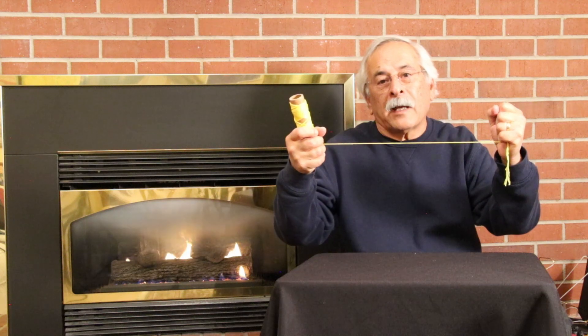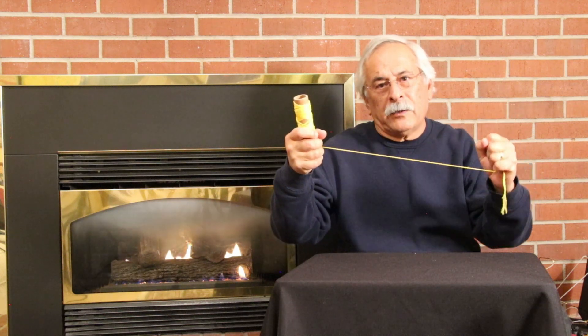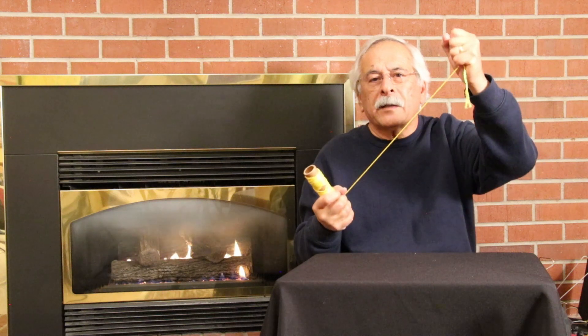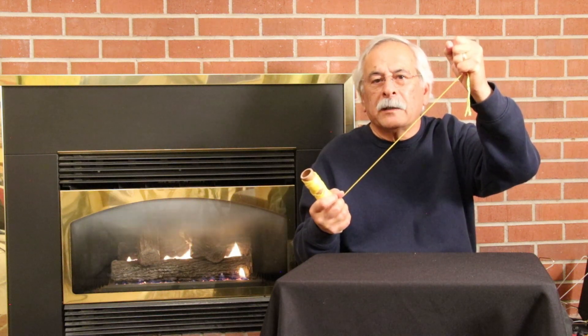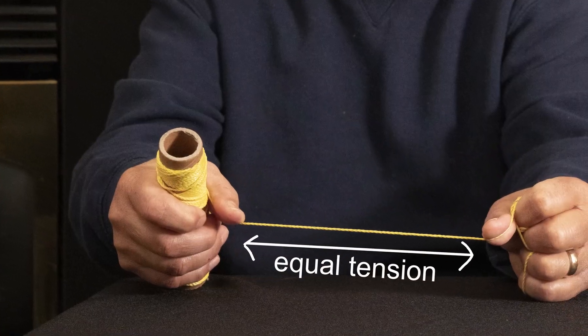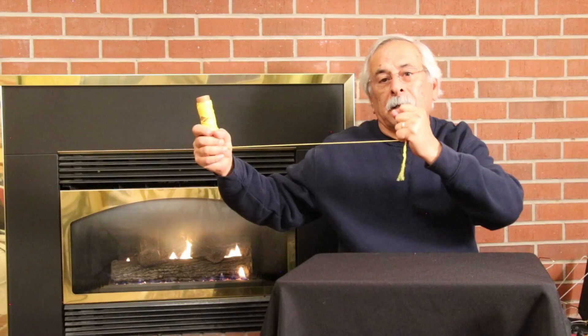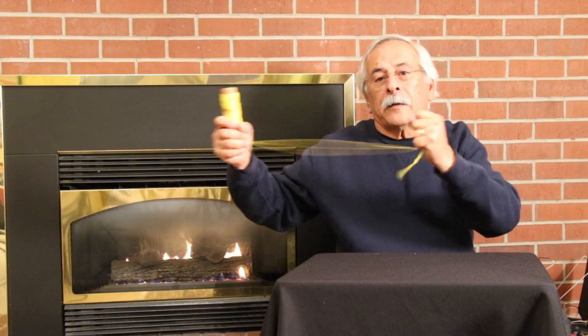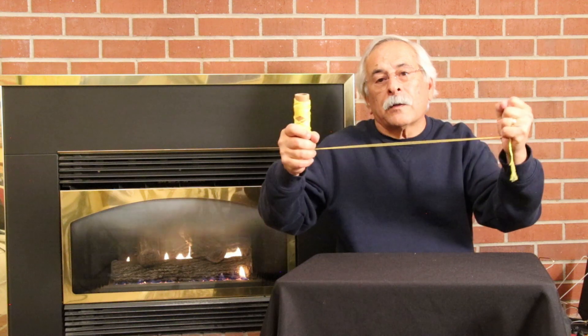Applying force in opposite directions at the ends of a string result in tension. The string will resist the pulling force and movement of the ends. The tension is equal at any point along the entire length of the string. The strength of the string will determine the amount of force that can be applied without breaking.